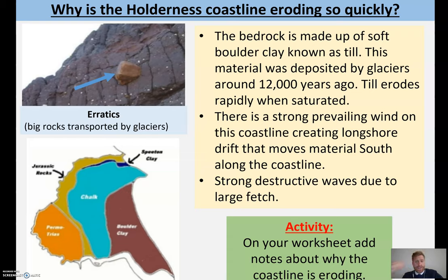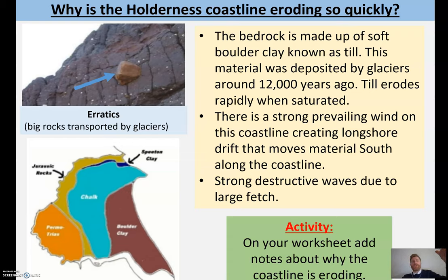The third and final reason why this coastline erodes so quickly is because of the long fetch. There's a huge fetch in that part of the world in the northeast, and it gets really strong destructive waves. If you watched the BBC clip earlier, you would have seen some of those waves and just how violent the sea gets in that area. So to summarise: cliffs made of poor boulder clay material, a lot of longshore drift occurring so there's no beach to protect it, and really strong destructive waves due to a large fetch in the region. Pause the video now and make notes on why the coastline is eroding so quickly.